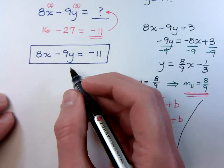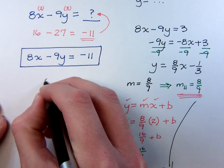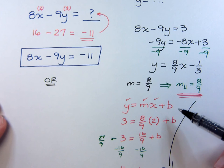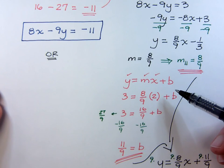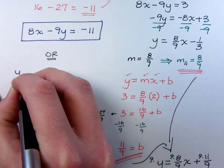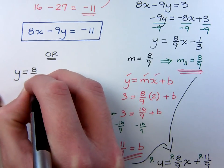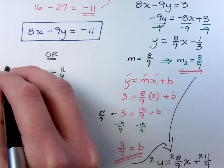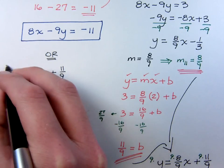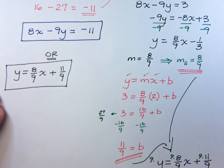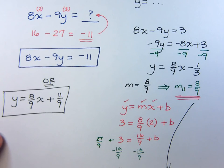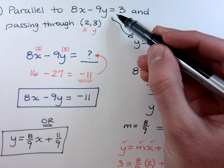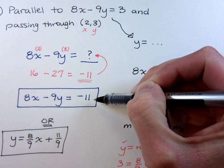So, you can either have this in your standard form, or if you prefer to do all of this long work over here, then you'll eventually get to your slope-intercept form, which is y equals 8 9ths x plus 11 9ths. Both of these answers are acceptable, but in terms of how can you make the problem easy, keep things in standard form. If you start in standard form, work it in standard form, and your life is going to be a lot easier that way.